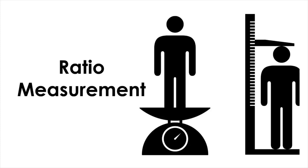Finally, the ratio level of measurement is at the top of all the levels. This level has all the properties of the previous three levels plus absolute zero, which is a unique and non-arbitrary value representing the theoretical absence of the quantity being measured. For example, when body weight is measured in kilograms, zero kilograms represents the complete absence of weight, even though we know it doesn't actually happen in real life. Categories from this level have all the arithmetic characteristics of numbers, so any arithmetic operation is allowed.